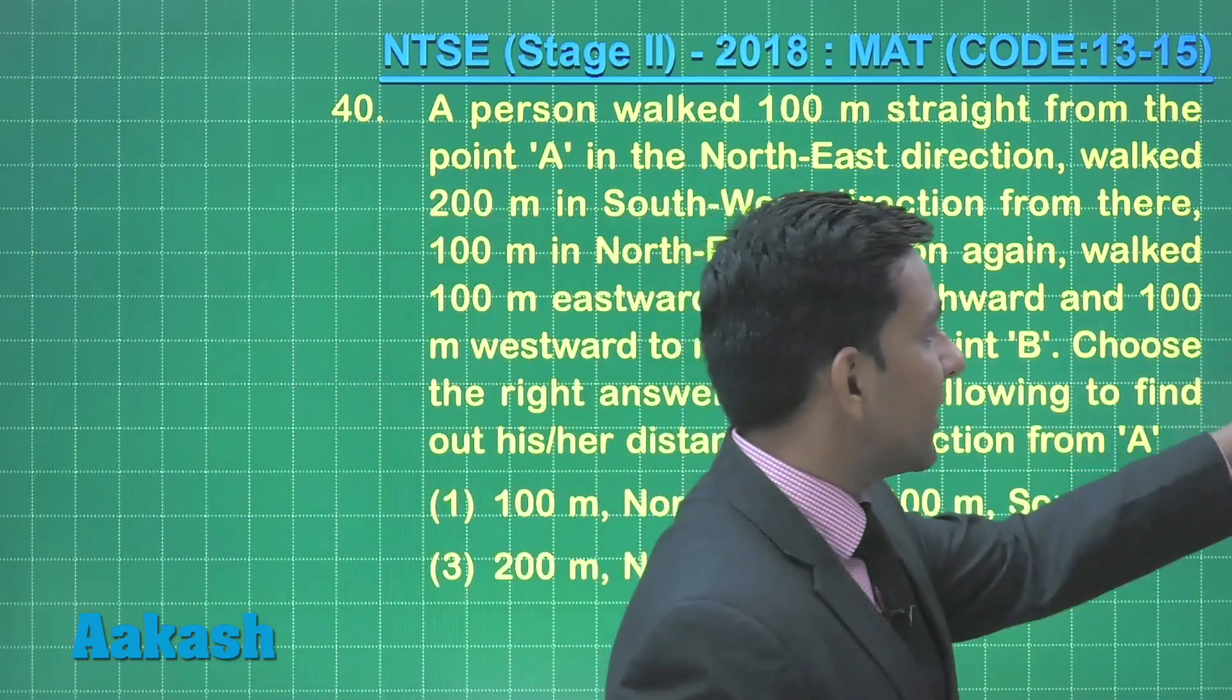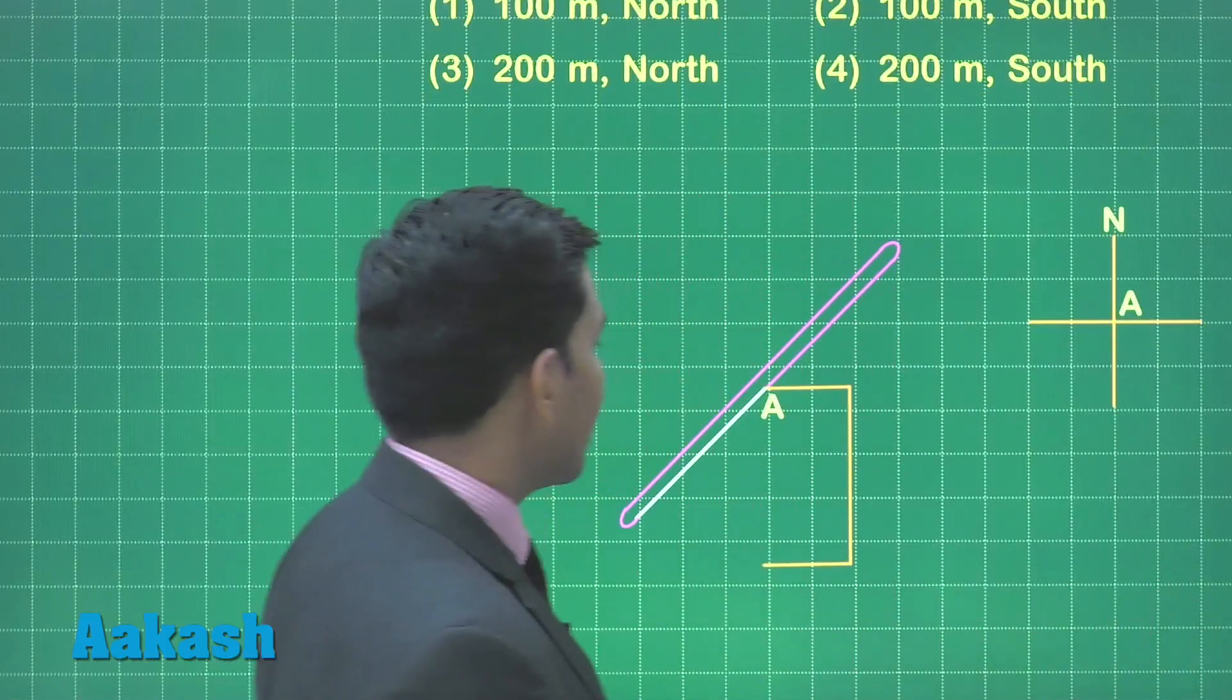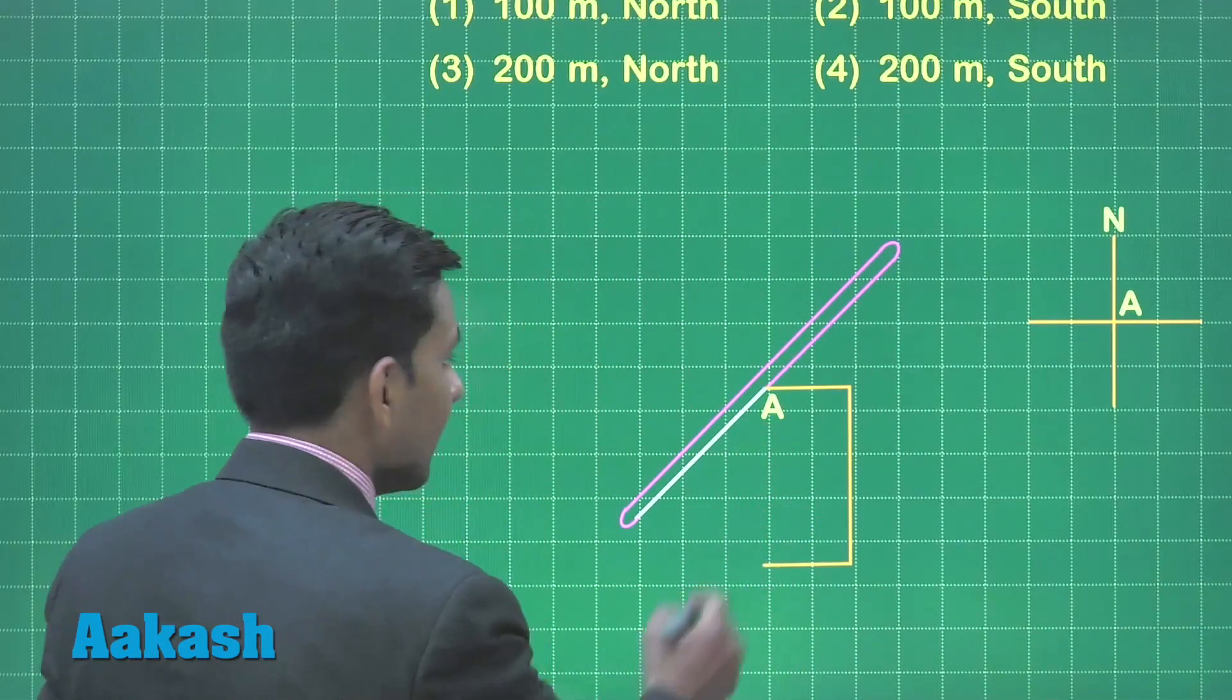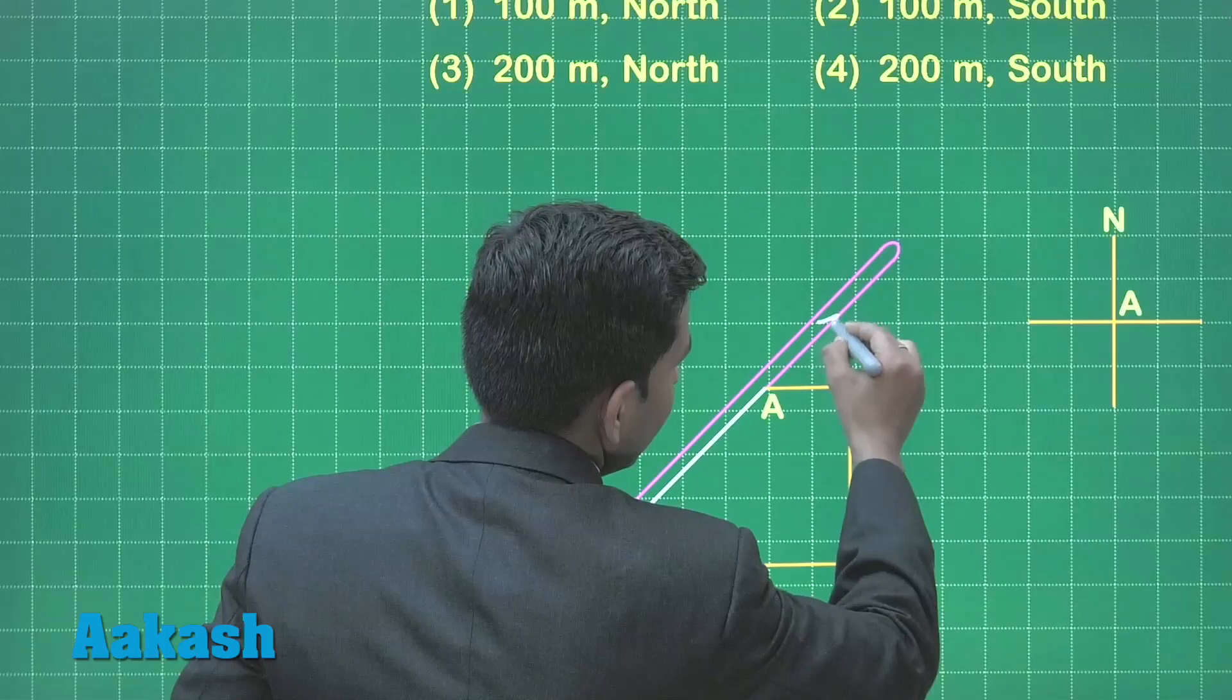So here first we will represent the given statement by diagram. So we are taking the initial position of that person A and he is moving in northeast direction 100 meter.